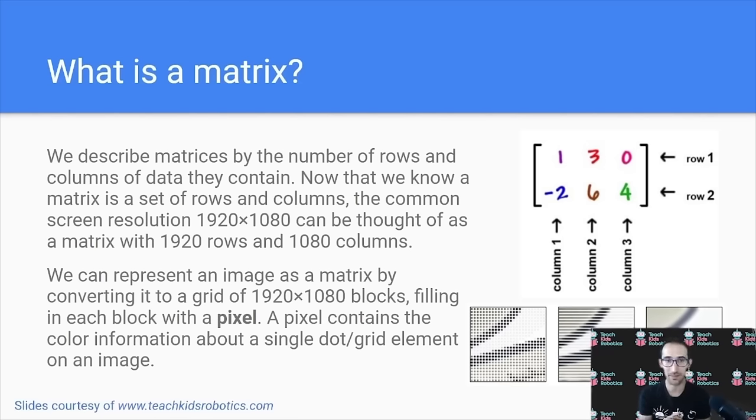We can also represent an image as a matrix by converting it to a grid of 1920 by 1080 blocks, filling in each block with a pixel. Now a pixel is the term for the individual dot in the image. And this contains information about color that helps us build up the original image.